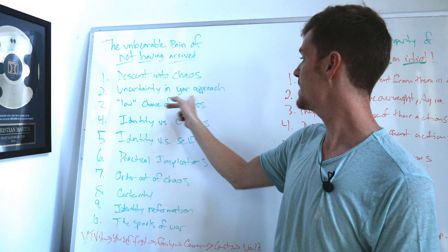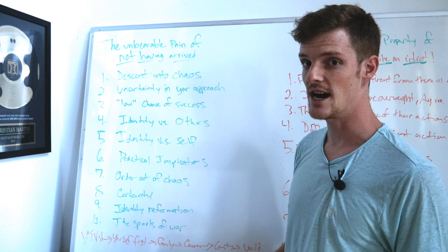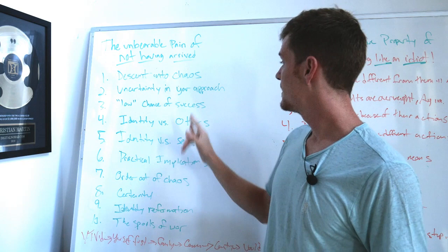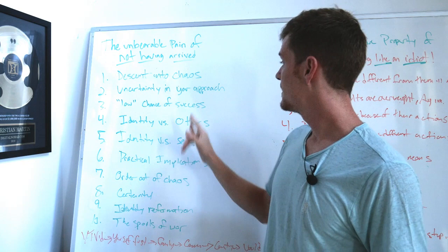So uncertainty in your approach is going to develop. Let's say you're an entrepreneur. You're going to start to doubt if you're doing the right things or not. And you're going to start to jump around, and you might abandon your path.